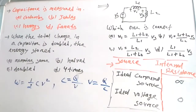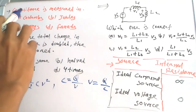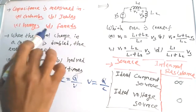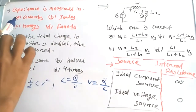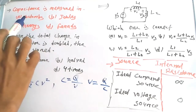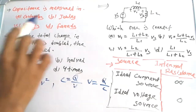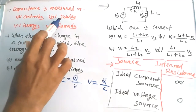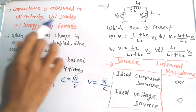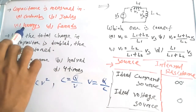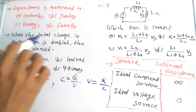In the next objective question on units: capacitance is measured in Farad, Coulomb is the unit of charge, Joule is the unit of energy, and Henry is the unit of inductance.